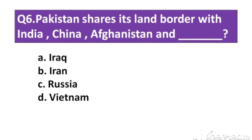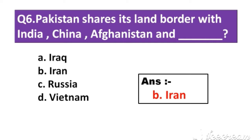Question number 6: Pakistan shares its land border with India, China, Afghanistan and which country? Option A: Iraq. Option B: Iran. Option C: Russia. Option D: Vietnam. The right answer is Option B: Iran.